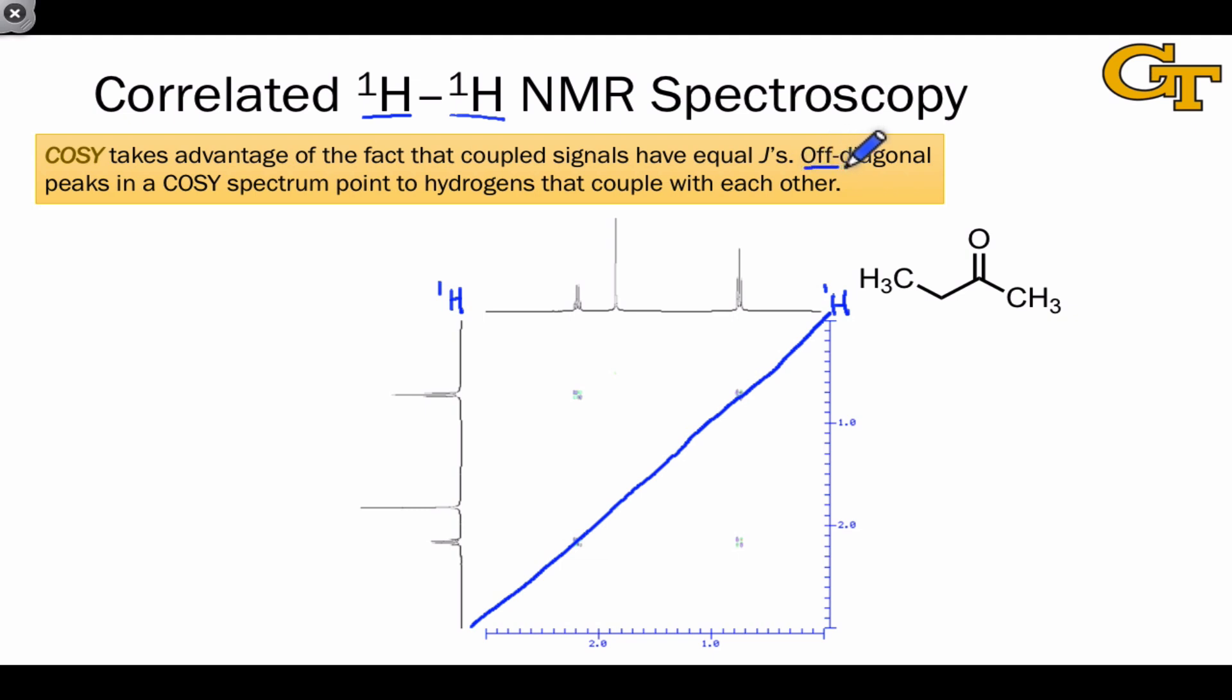What we're looking for in a COSY spectrum are off-diagonal peaks, or so-called cross peaks. These indicate coupling between the signals that they point to on the axes. For example, we find a cross peak right here, and this cross peak, if we draw a horizontal line out to the vertical proton NMR spectrum, we land at this triplet. If we draw a vertical line up from this cross peak to the horizontal spectrum, we land at this quartet. What we can conclude from this is that this peak corresponding to this triplet couples to this peak corresponding to this quartet. Even without integration information, we could conclude that this triplet must correspond to three protons since it's giving rise to a quartet at this signal via coupling, and that this quartet corresponds to an integration of two protons since it's giving rise to a triplet here.